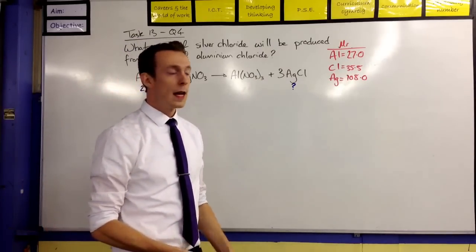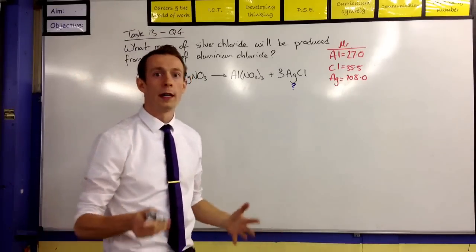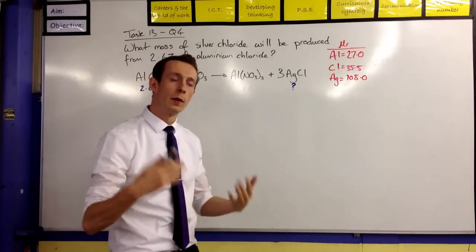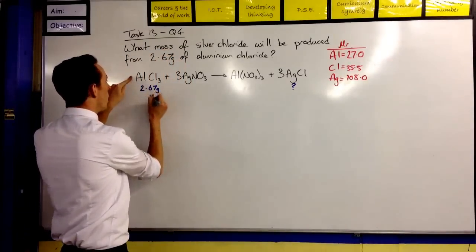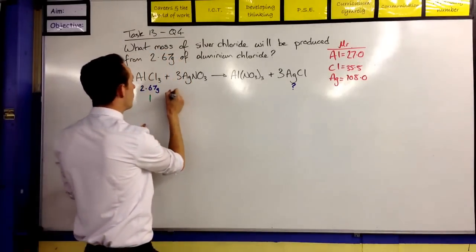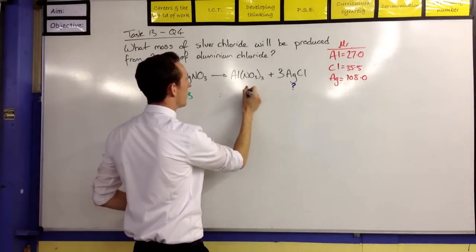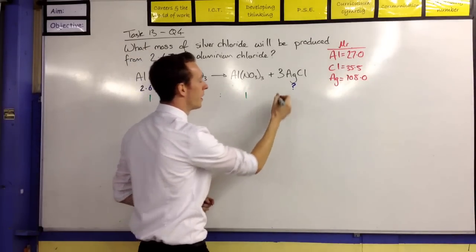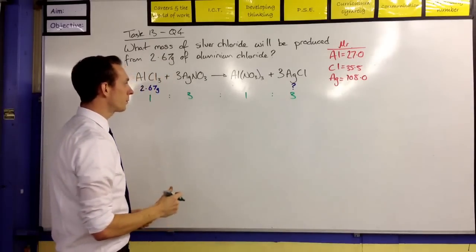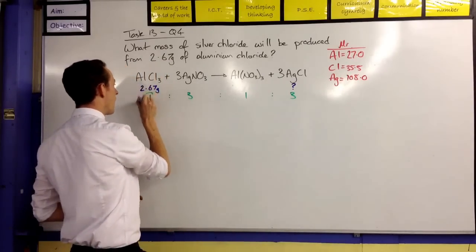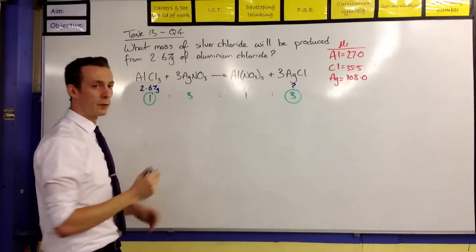The second thing we need to do is, which is very important as well, is to determine what are our molar ratios here. So what are we working with in terms of molar ratios? So we've got one mole of aluminium chloride reacting with three moles of silver nitrate to produce one mole of aluminium nitrate and three moles of silver chloride. Now, we're interested in that one and this one. Okay, those are the two things we need to know about.